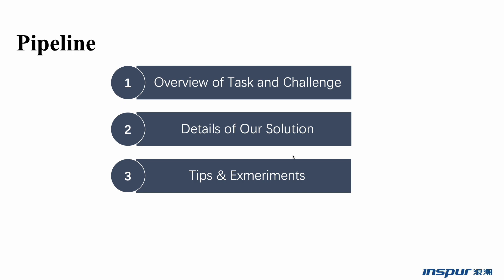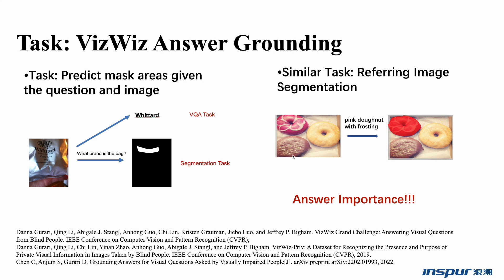I will introduce our work from the following aspects. The VizWiz Answer Grounding dataset comes from VizWiz VQA, which stands for a dataset including photos taken by blind persons with one recorded spoken question and ten crowdsourced answers. The answer grounding task aims at grounding answers to visual questions asked by people with visual impairments. As shown in the image above, the question is asking the relevant brand of the product and the ground truth is just the brand area.